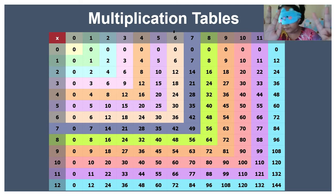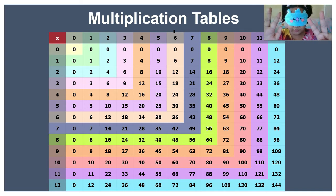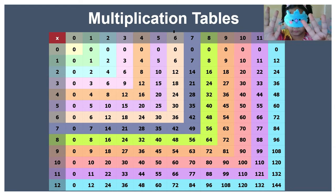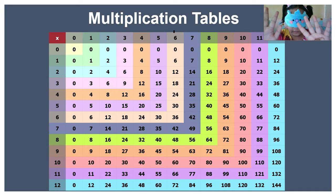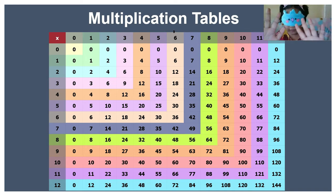2 times 7 equals 14. 2 times 8 equals 16. 2 times 9 equals 18. 2 times 10 equals 20.